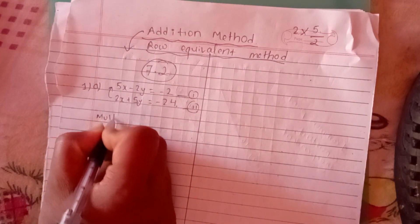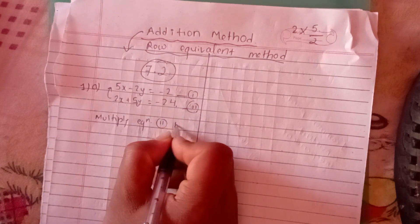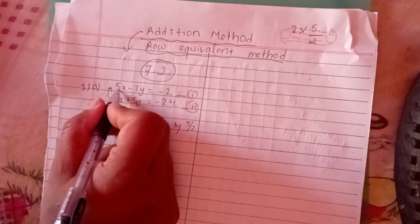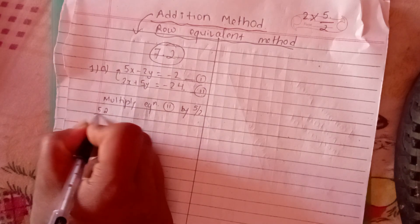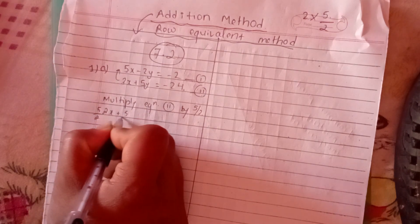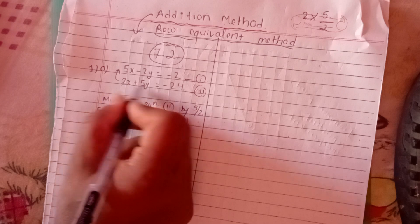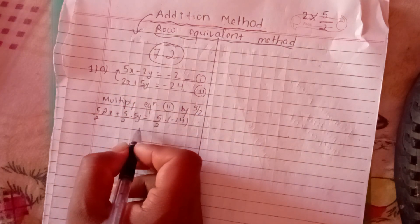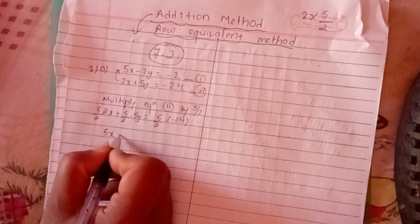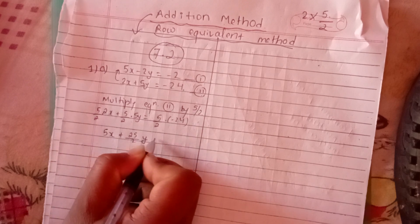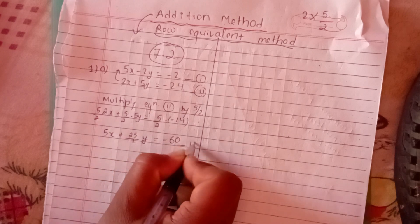So what do we do? We multiply equation 2. Equation 2 is multiplied by 5 over 2. So 5 over 2 into 2x plus 5 over 2 into 5y equals 5 over 2 into minus 24. We do this equation multiplied by 5 over 2.